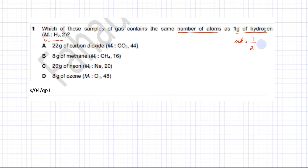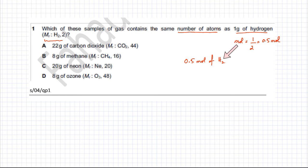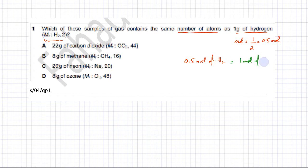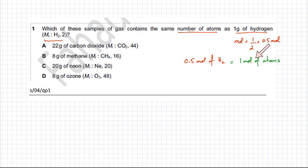So we have 0.5 moles of H₂. Since one hydrogen molecule has two atoms, 0.5 moles of H₂ equals 1 mole of atoms. So what the question basically wants is: which of the options A, B, C, or D contains 1 mole of atoms?